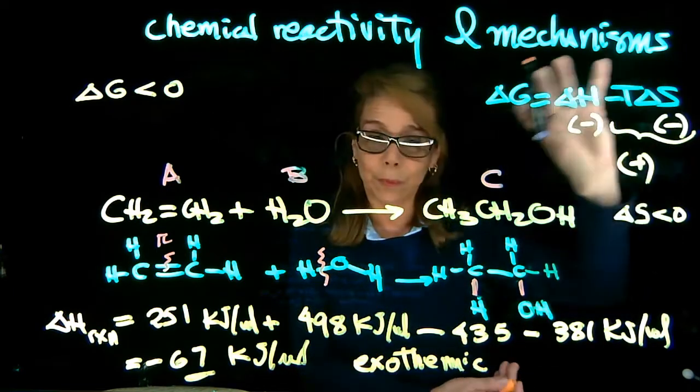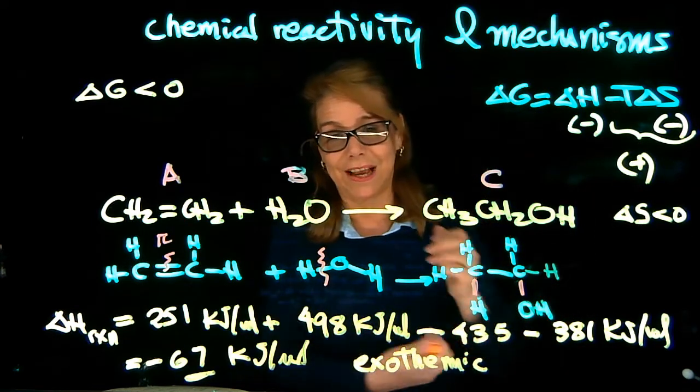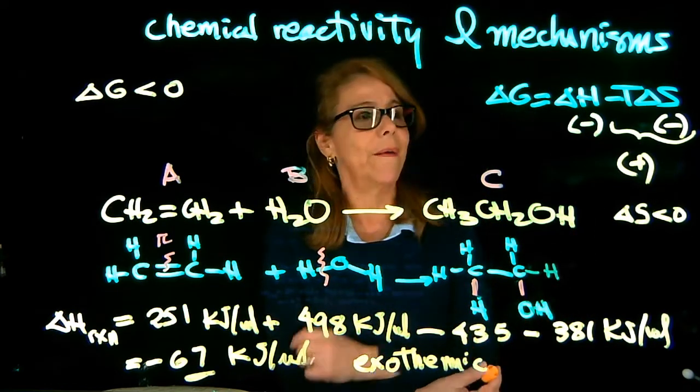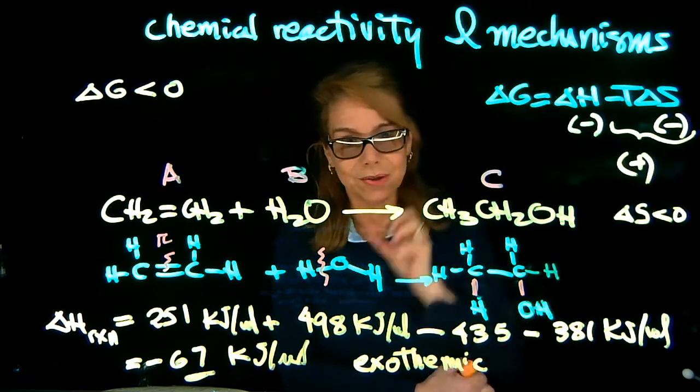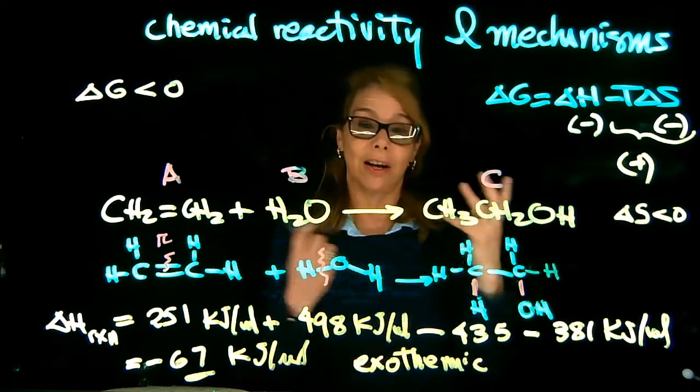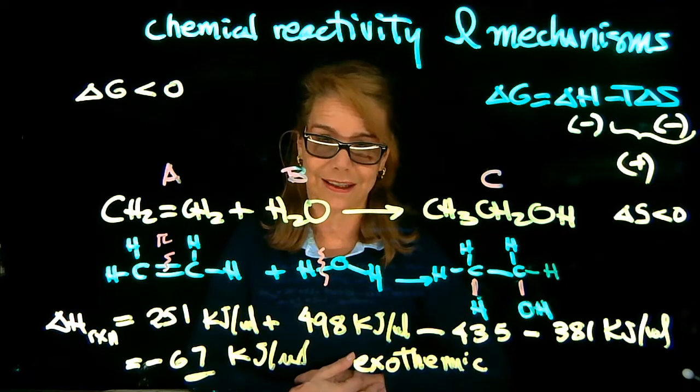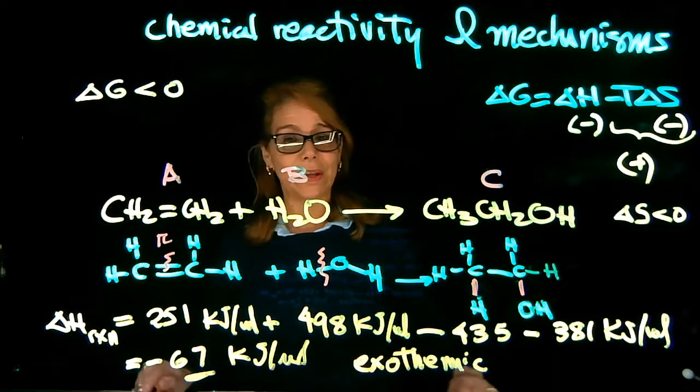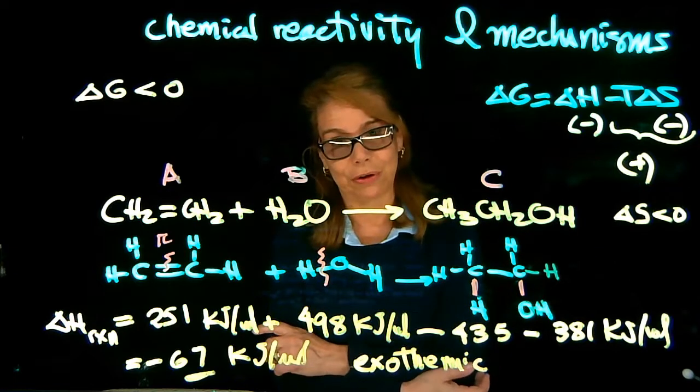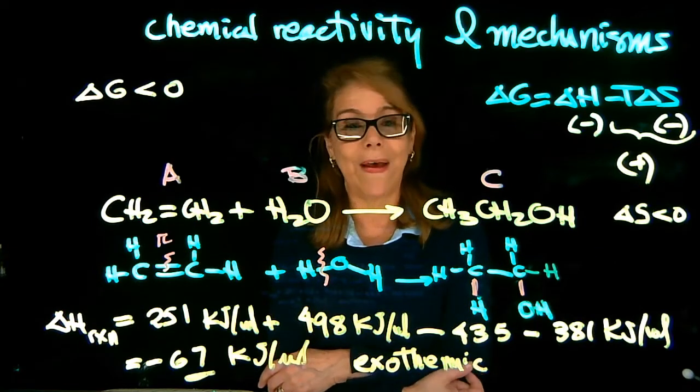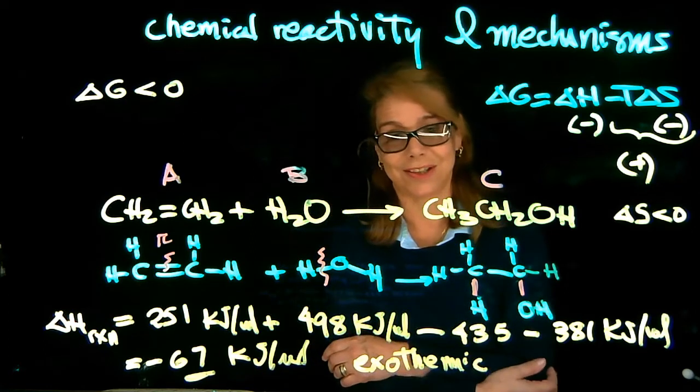But again, experimentally, we can work with temperature to make addition reactions being product favor. Because again, we have one positive term and one negative. We want this term, the delta H, to be larger, so that at the end, we have a negative delta G. So here we have predicted the sign of delta H, and we have learned how to do the calculation for the enthalpy of the reaction using bond dissociation energy.